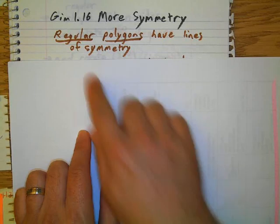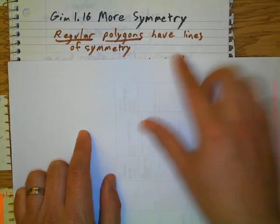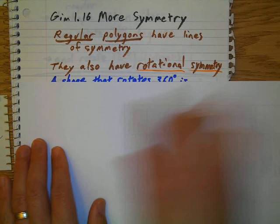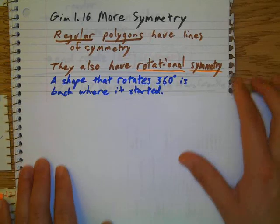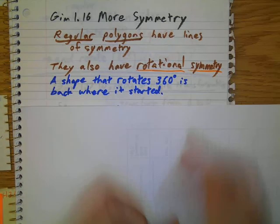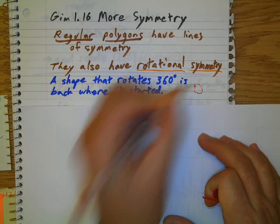First, we've got irregular polygons all have lines of symmetry, as we noticed in our classwork today. They also have rotational symmetry, so any shape can rotate 360 degrees. 360 degrees is if I go all the way and then back where I started from.